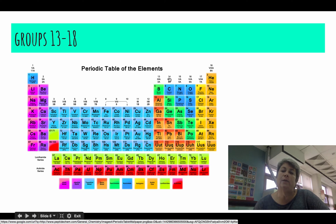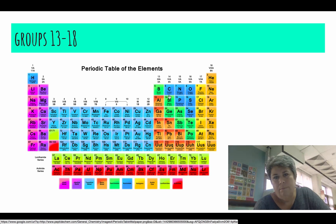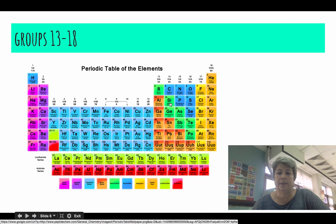Group fourteen, or also called the carbon family, what do you think? How many valence electrons? Fourteen? No. They have four. So, carbon, silicon, germanium, all of these elements, their atoms have four valence electrons that are available for bonding.